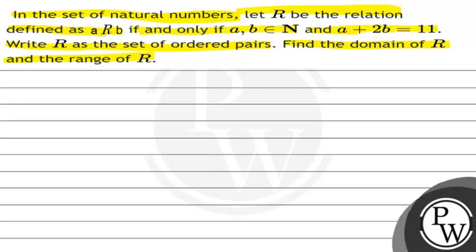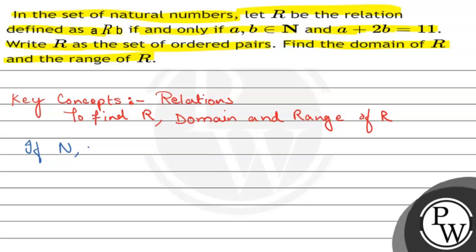The key concepts are that this question is related to relations. In this question we have to find R, its domain, and its range. Let's do it. As given in the question, N and R is defined by a R b, a relation b, which belongs to the condition that a plus 2b equals 11.